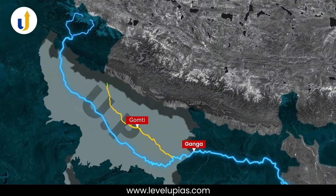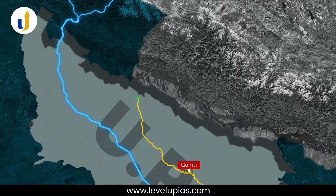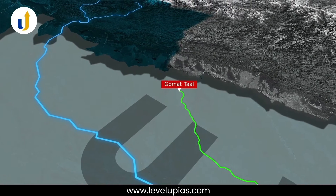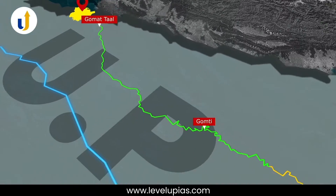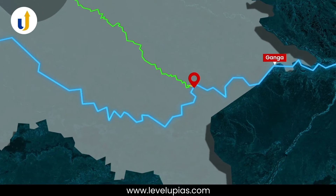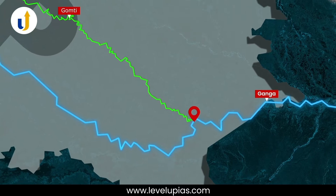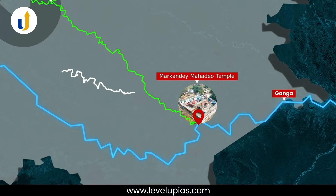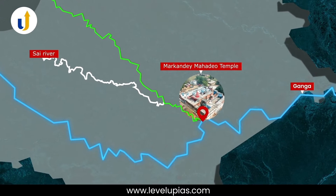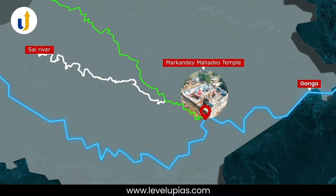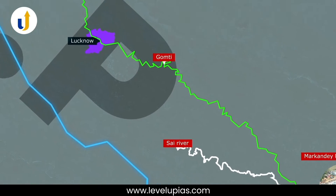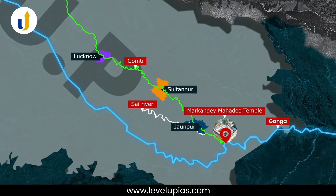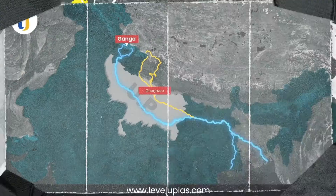The Gomti River originates from Gomatal, formerly known as Fulharjil, near Madhutanda in Pilibhit, UP. At the Sangam of Gomti and Ganga, the famous Markande Mahadev Temple is situated. Its most important tributary is the Sai River, which joins near Jaunpur. The cities of Lucknow, Sultanpur, and Jaunpur are located on the banks of the Gomti.